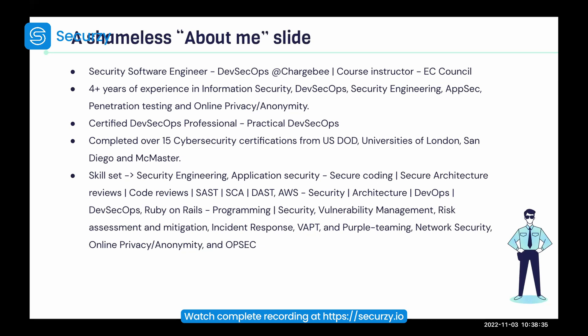On the technical side, I work with SAST, SCA, and DAST. I also specialize in cloud security — AWS, IAM roles, and AWS security architecture in a DevOps and DevSecOps context. I entered security via penetration testing but shifted out of it. In terms of programming, I specialize in Ruby on Rails and Java.